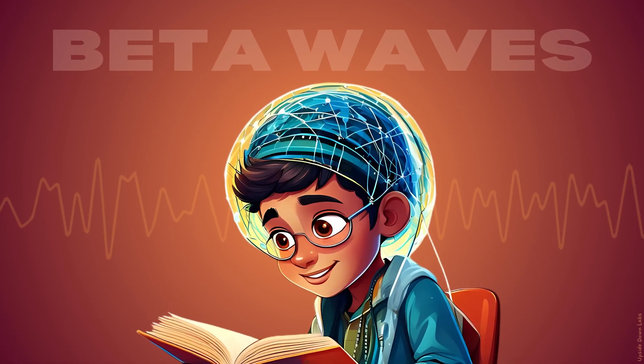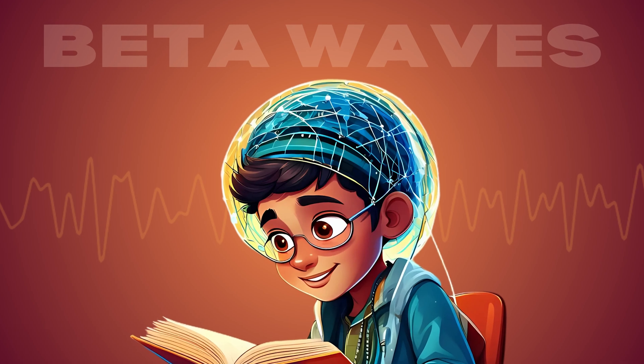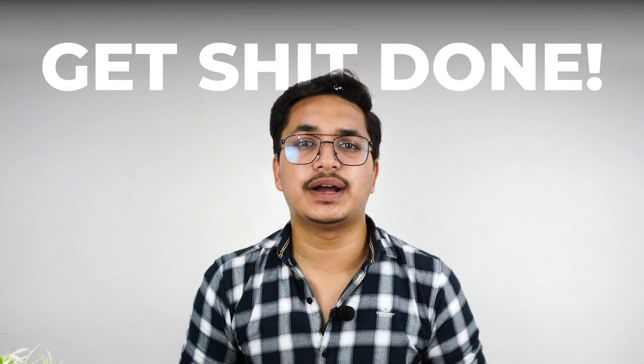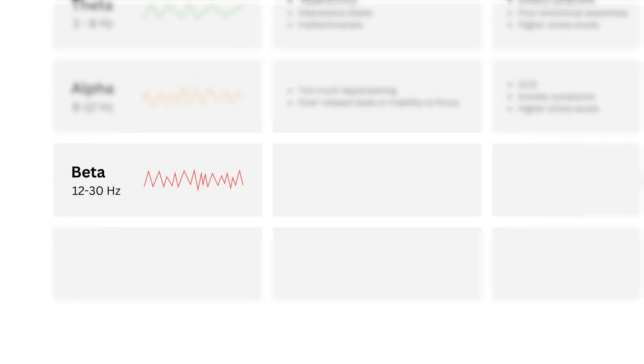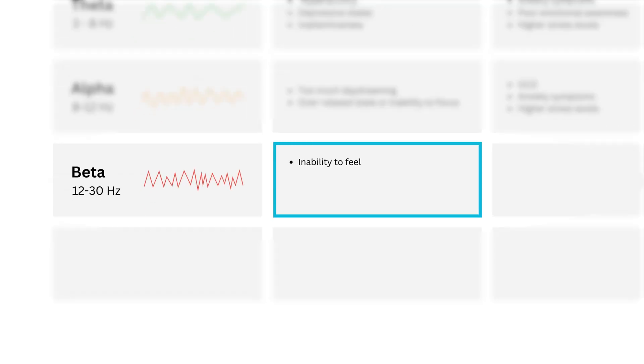Most of our lives we spend in this type of brain wave, which is why many mental illnesses are associated with beta waves. They are observed during conscious states such as cognitive reasoning, thinking, speaking, calculation, and reading. Beta waves can be increased by drinking common stimulants such as caffeine. You can think of beta as a 'get things done' state of mind.